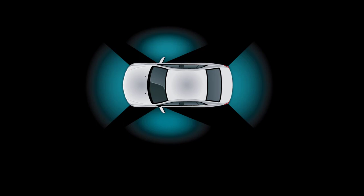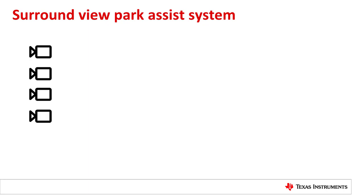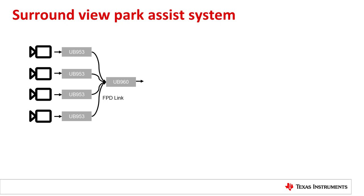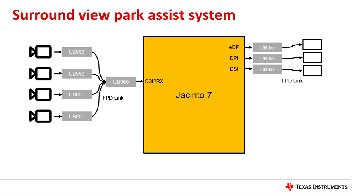My name is Kedar and I am the software architect of Processor SDK. Let us first see how a camera-based Surround View Park Assist system looks like from a hardware block diagram point of view. On the input side, we take an example of four cameras placed on four sides of a car. The cameras typically capture data in raw-Bayer format and stream this via FPD-Link serializer like UB953 to a central ECU. UB960 on the central ECU does the deserialization and converts to CSI-2 stream which is fed to the Jacinto 7 SoC. On the output side, we can have multiple displays connected to the Jacinto 7 which can be used to visualize the Surround View output on a display device.